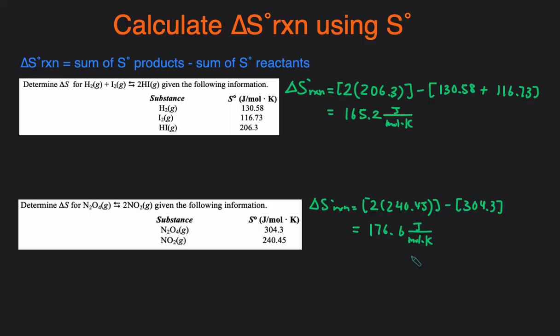That's how you calculate the delta S of the reaction using standard entropy: products minus reactants. Just make sure to multiply by the number of moles and incorporate that into the calculation. Also make sure that the units are in joules per mole times Kelvin, or sometimes kilojoules per mole times Kelvin.